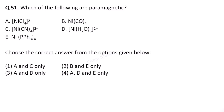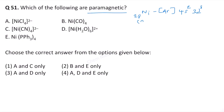Which of the following are paramagnetic? We have 5 different nickel complexes. The atomic number of nickel is 28, and therefore the electronic configuration is argon (18 electrons) and then 4s² and then 3d⁸, giving a total of 28 electrons.